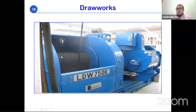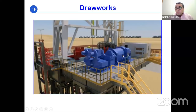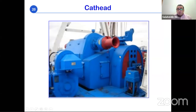The drawworks contains the drum around which the drilling line wraps, as well as manual and auxiliary brake systems to control upward and downward movement. The drum is traditionally positioned to the left of the driller. Modern rigs now include a driller's cabin — a cyber chair setup — where the driller manages operations from inside a room rather than standing at the open controls.